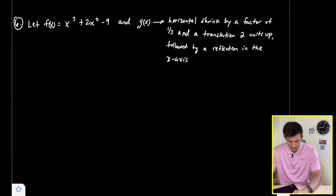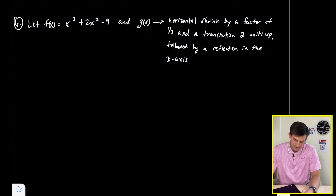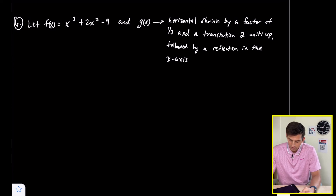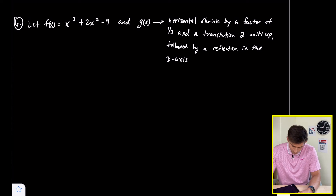Last example: let f of x equal x cubed plus 2x squared minus nine. This time they give us the transformations and want us to apply them to the function: a horizontal shrink by a factor of one-third, a translation two units up, followed by a reflection in the x-axis. We can apply each of these one at a time.